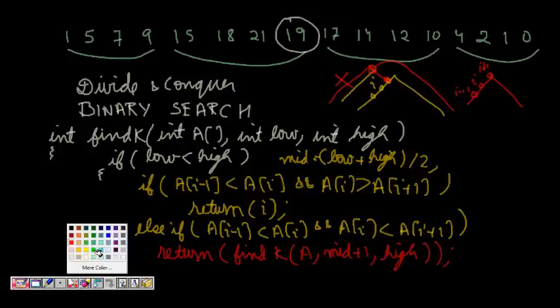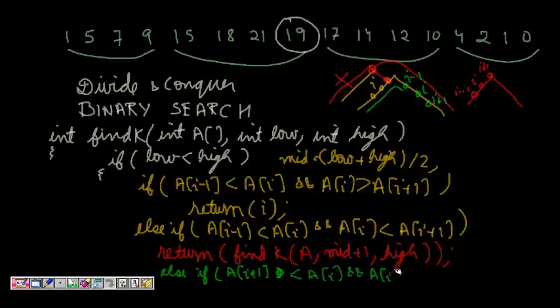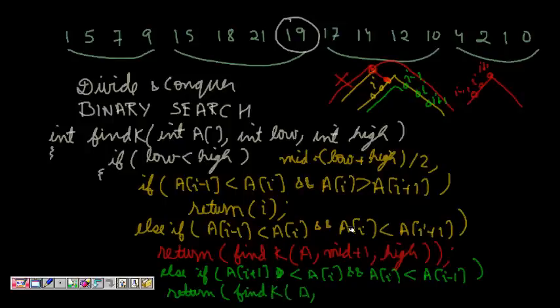And similarly if I am in the other region, what should I do? So if I am somewhere here and I find this is my i, this is i+1, and this is i-1. If this is the case, a[i-1] is greater than a[i] and a[i] is greater than a[i+1], I should now search in this region. So else if a[i+1] is less than a[i] and a[i] is less than a[i-1], I will do return. I will search in which space now? Find k, a, now I have to search in low till - where? So I have to search now till mid, mid-1.